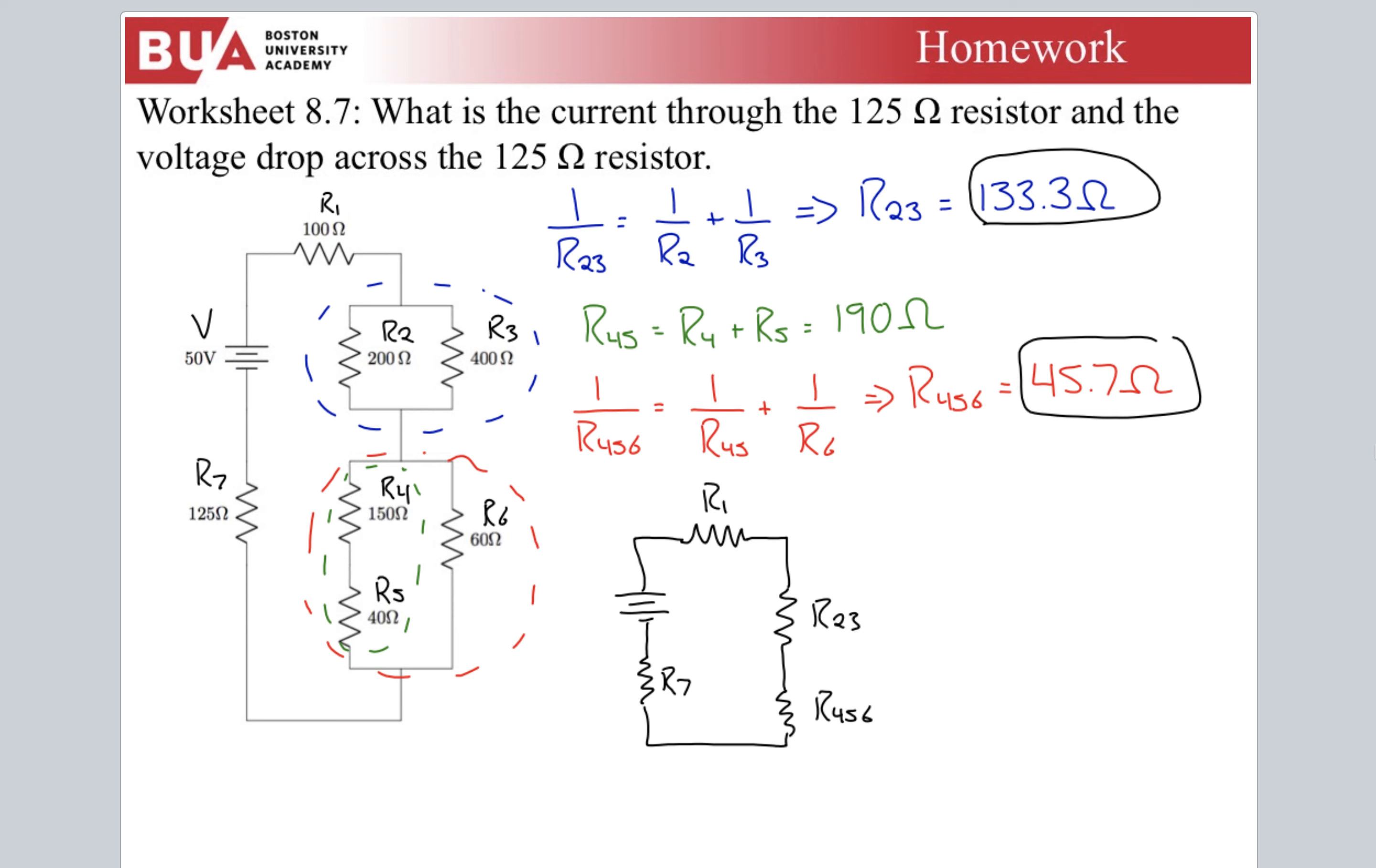Now we can go to an R equivalent, just add them all up. R equivalent is R1 plus R23 plus R456 plus R7. Add them all up because they're now in series and I get an equivalent resistance for this circuit of 404 ohms.